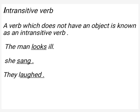Intransitive verb: A verb which does not have an object is known as an intransitive verb. Aisa verb jis mein object موجود na ho. Intransitive verb ka sentence وہ خود بغیر object کے بھی complete ہوتا ہے۔